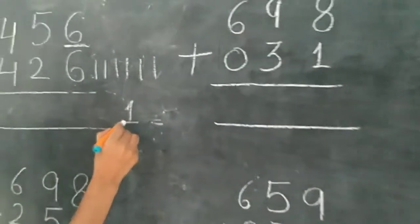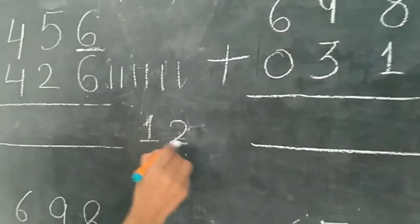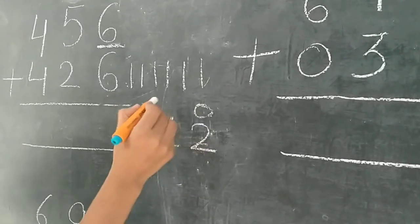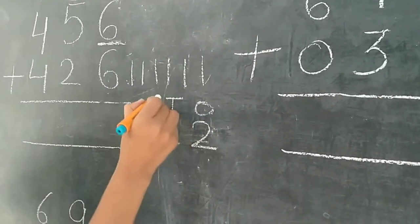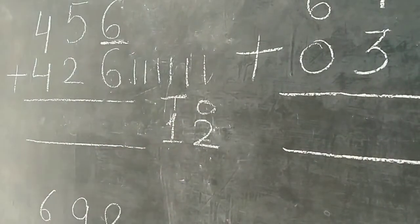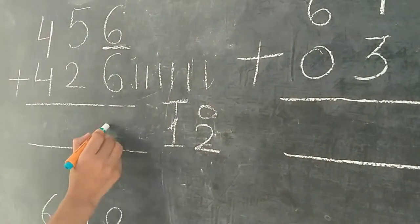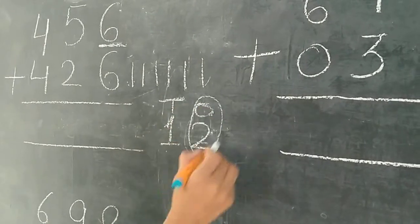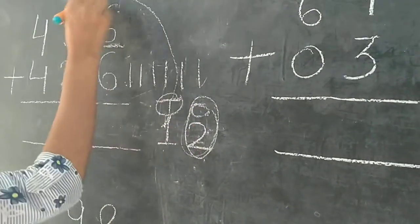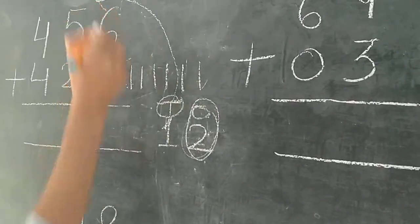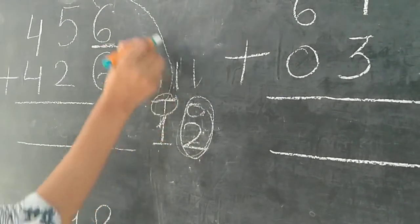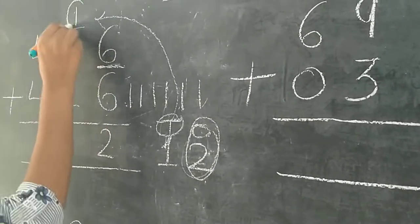We write here 12. 2 is our 1s and 1 is our 10s. We always write here the 1s digit. And 10s is our carry. So we write here 2, and 10s is our carry, so we write here 1.